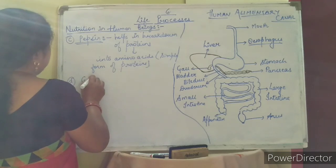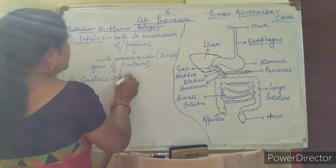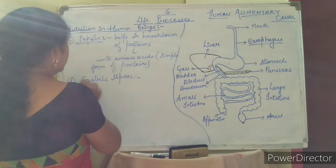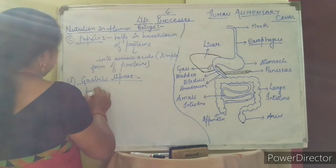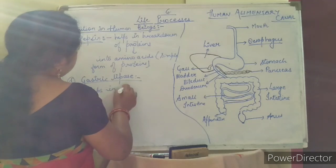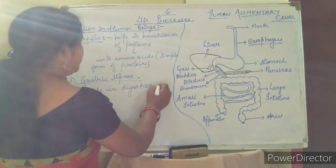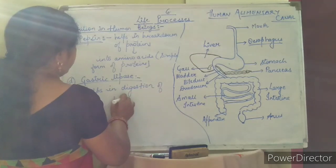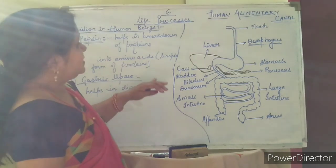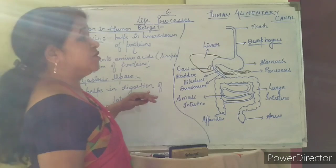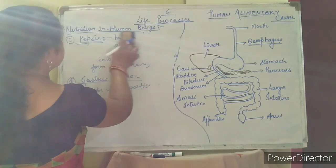One more component present is gastric lipase. What is the function of gastric lipase? It helps in the digestion of fats. Lipase relates to lipids — it helps in the breakdown of fats. These are the components of the gastric juices.